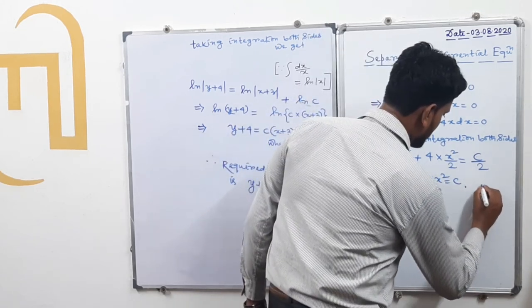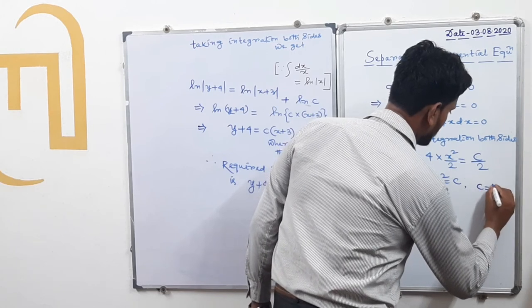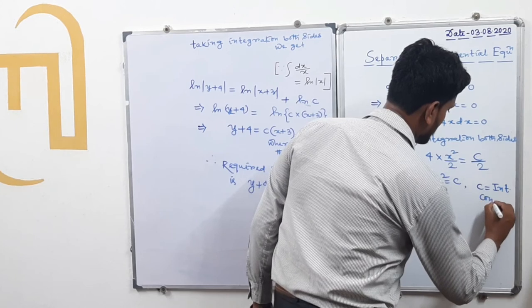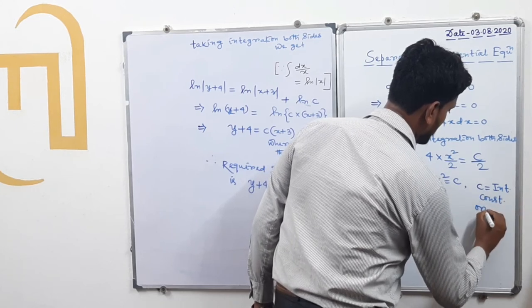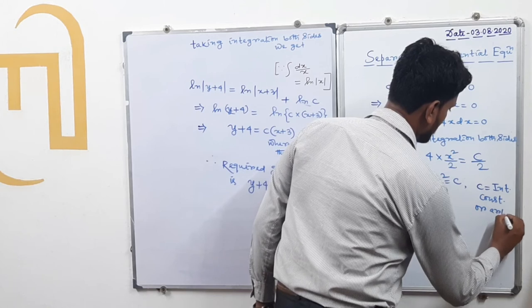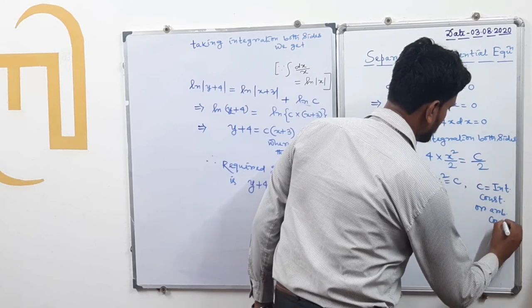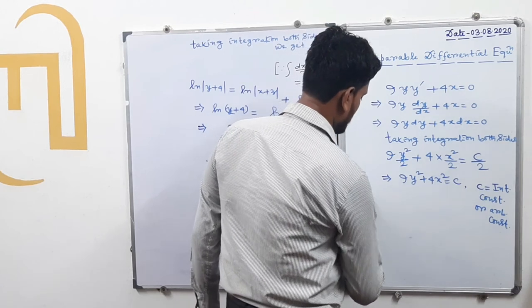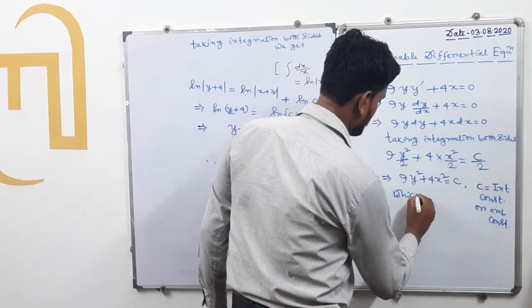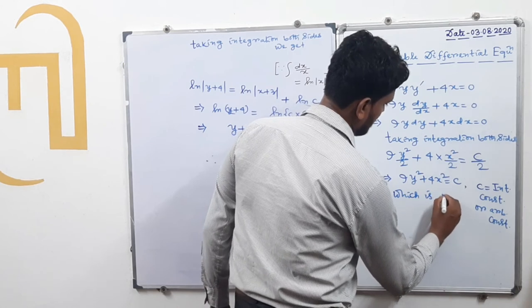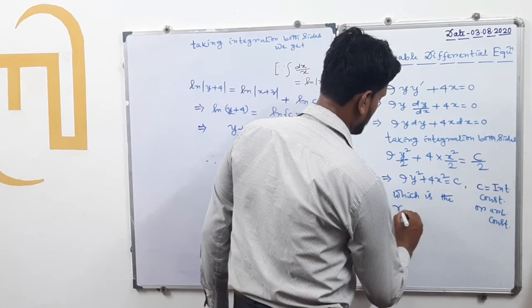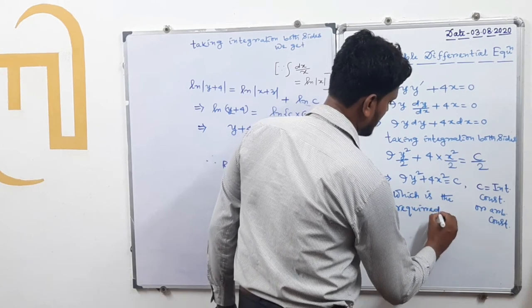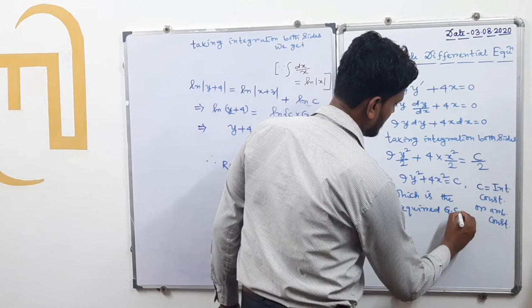Here c is the integrating constant, also called the arbitrary constant. So the required general solution is 9y² + 4x² = c.